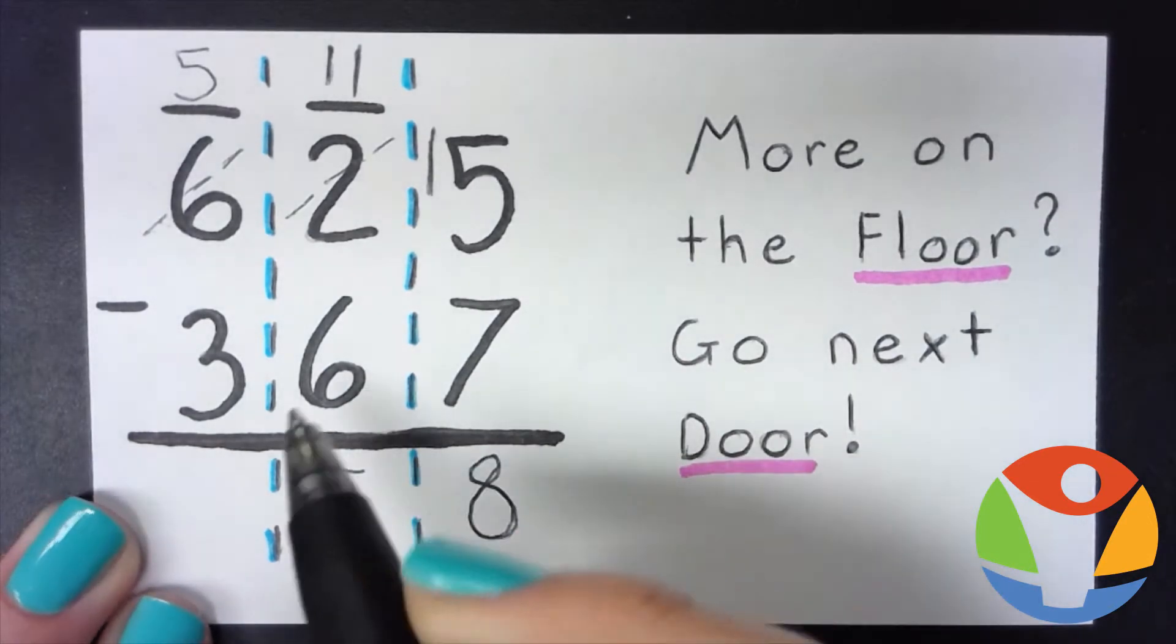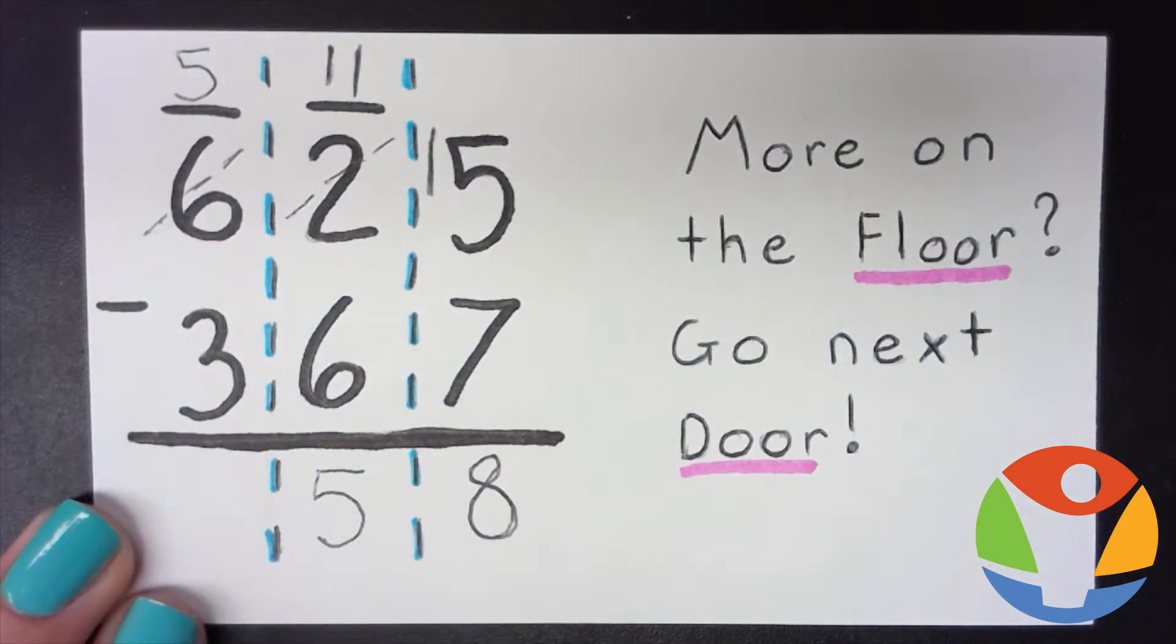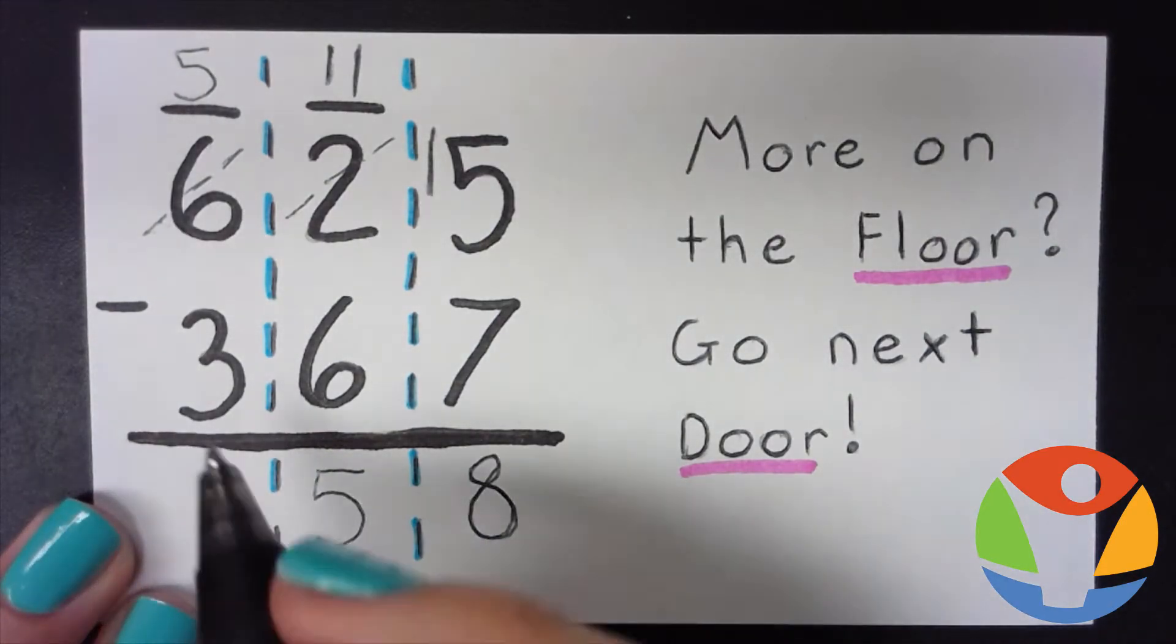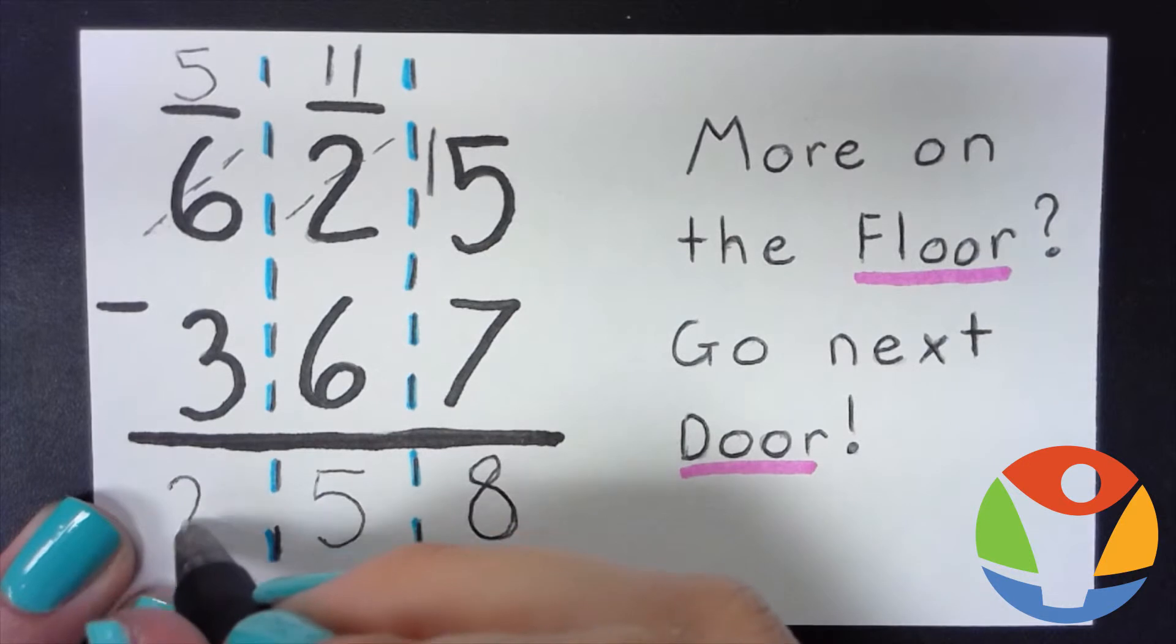And finally we have 5 minus 3, and that gives us 2.